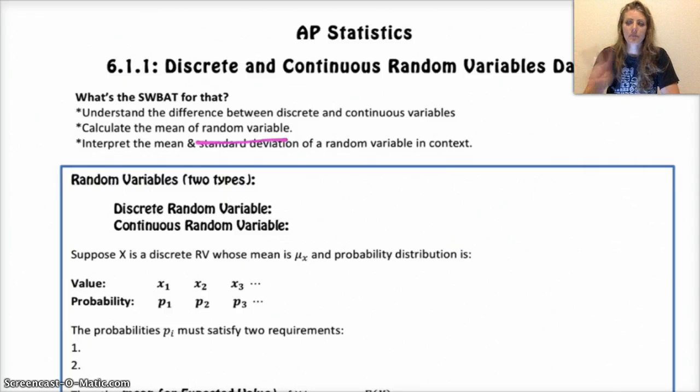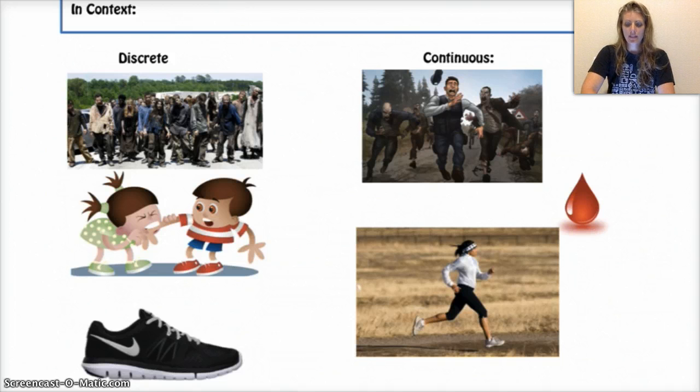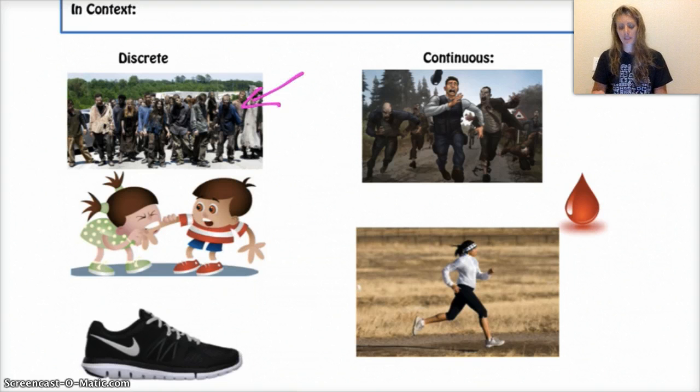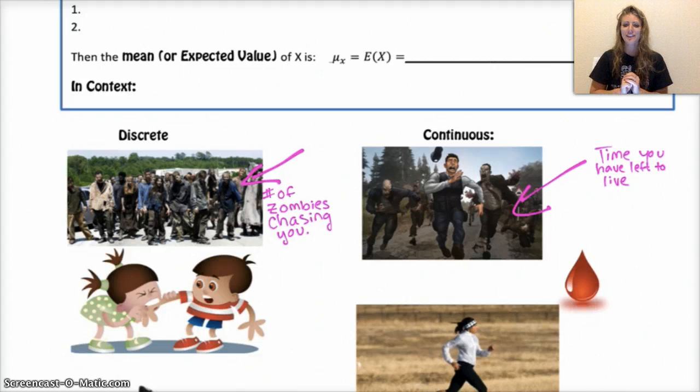You're going to see two different types of random variables. One is a discrete random variable, and the other is continuous. To describe the difference between the two, I have some nice pictures down here. Discrete. We're worried about the zombie apocalypse. So your discrete random variables, or discrete numbers, are like counting numbers types of things. For example, the number of zombies that are chasing you. Whereas a continuous variable would be like the time you have left to live when those zombies are chasing you.